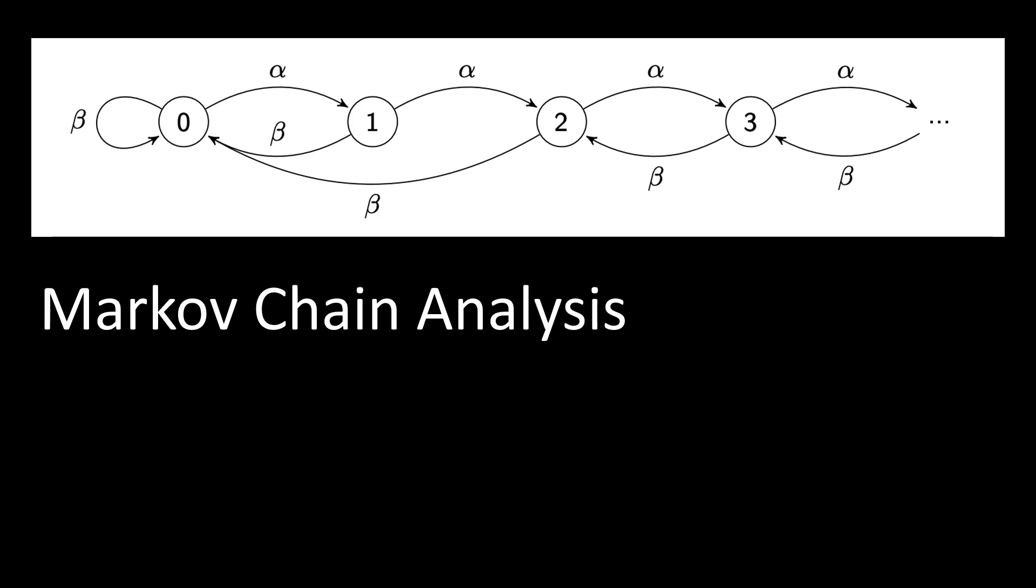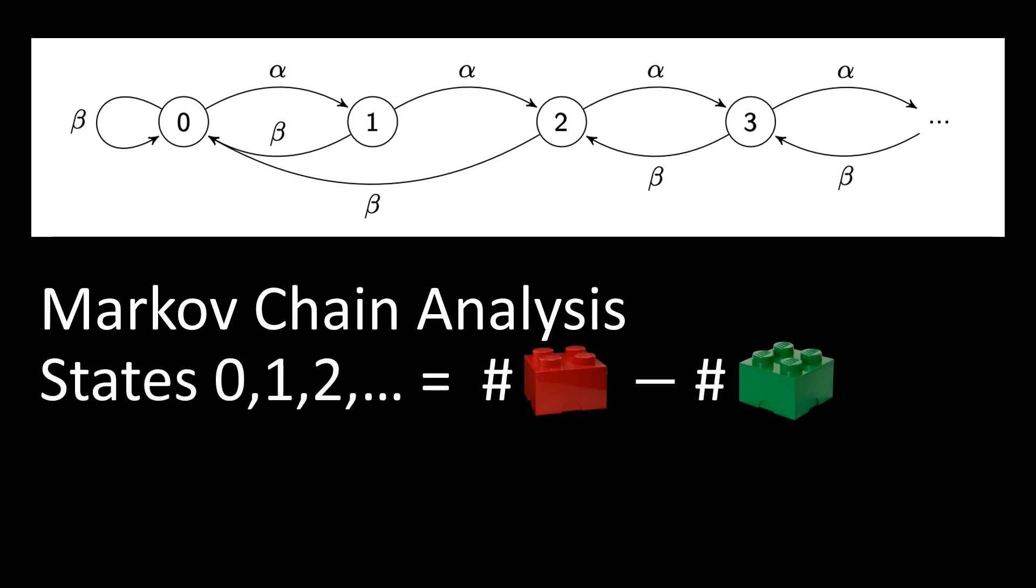Then the honest miners found a block and we are back to state 2. If the honest miners find a block, we call this event beta. At state 2, another green block is published, and the miner decides to publish all its blocks, going back to state 0. So again, the state number here means how many blocks the attacker is secretly in the lead. It's the number of blocks of the red chain minus the number of blocks of the green chain.